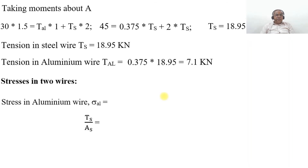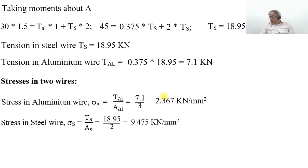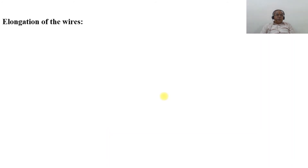What is the stress in the two wires? Stress in the aluminium wire sigma_AL equals TAL divided by A_AL, which is 7.1×10³ divided by 3, giving 2.367 kN/mm². Similarly, stress in the steel wire sigma_S equals TS divided by AS, which is 18.95 divided by 2, giving 9.475 kN/mm².